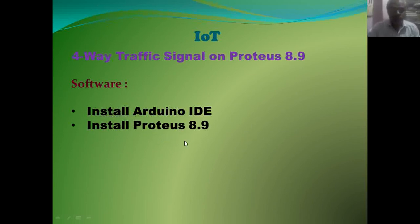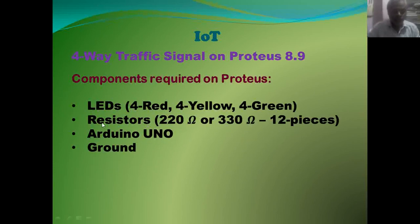For this, these two software must be installed on your system. We need the following components: LEDs — 4 red, 4 yellow, and 4 green LEDs. Resistors, either 220 or 330 ohm, 12 pieces. Arduino, VCC, and ground.